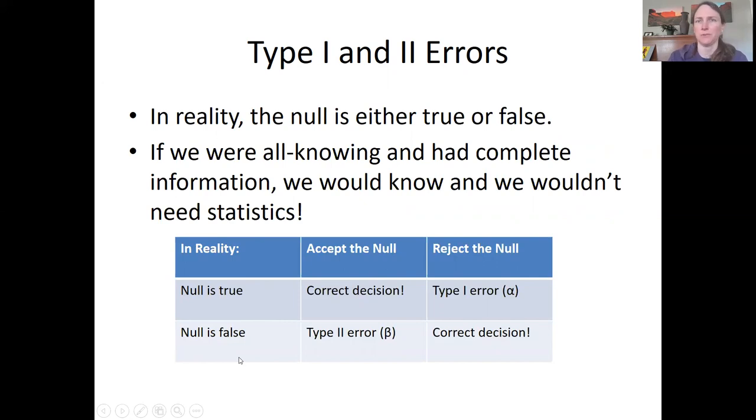And so we run our tests and we do our work and maybe we accept the null. Now, if we accept the null and it's true and we're correct, we've made the right choice. Or if we reject the null and the null is actually false, then we're also correct. So that's what we're hoping for. We want to be in one of these two boxes. Now, if we reject the null, but it's actually true, we're making a type one error. If we accept the null, but it's actually false, then we're making a type two error. And we want to minimize both the type one error and the type two error if we can, but we can't minimize them both at the same time.